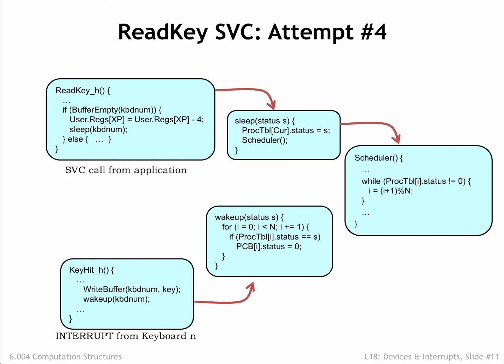Wakeup loops through all processes, looking for ones that are waiting for this particular I/O event. When it finds one, it sets the status for that process to 0, marking it as active. The 0 status will cause the process to run again next time the scheduler reaches it in its round-robin search. The effect is that once a process goes to sleep waiting for an event, it's not considered for execution again until the event occurs and wakeup marks the process as active.